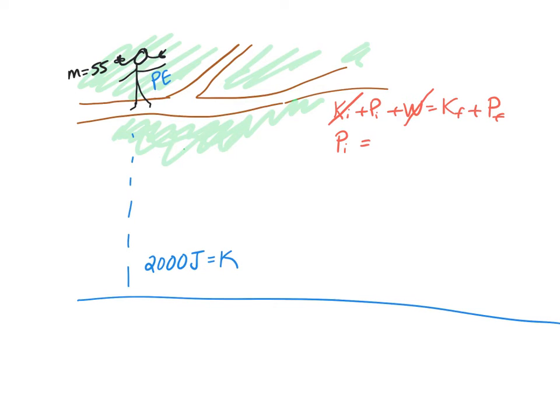So we then can say equals. All right, they told us the kinetic final. It was 2,000. And potential final. How much potential will she have when she hits the water? Well, she's going to be at a height of zero at that point. So we can say that the potential energy is zero. So really, the initial potential energy is just straight up 2,000 joules. Nice.